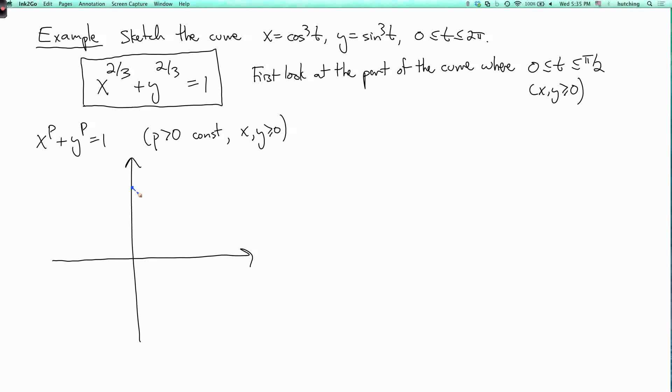So we already know a couple of examples of this. If p equals 1, then we get a line segment like this. And if p equals 2, then we get a quarter of the unit circle like this. So it's tempting to guess that when p equals 2/3, which is the case we actually care about, that we get something on the other side looking like that. And that's actually correct.